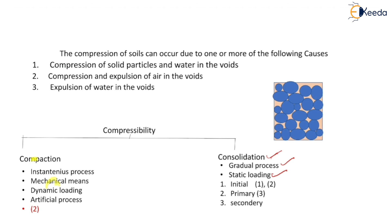The consolidation process is divided into three stages. First is initial consolidation, which takes place immediately after the construction, and its main causes are compression of solid particles, compression of water, compression of air, and expulsion of air. Once initial consolidation is over, primary consolidation takes place, whose main cause is expulsion of water. After primary consolidation is finished, secondary consolidation takes place, whose main cause is the plastic readjustment of the solid particles of the soil.